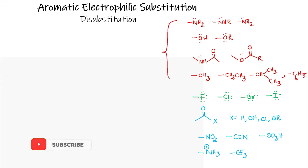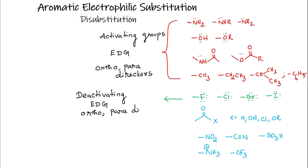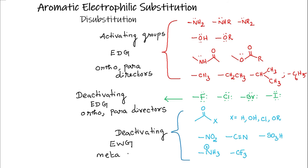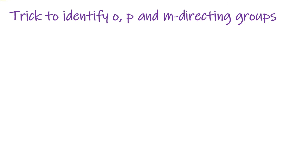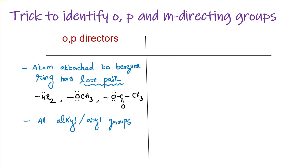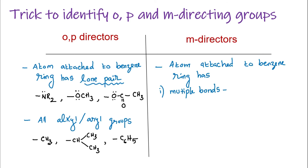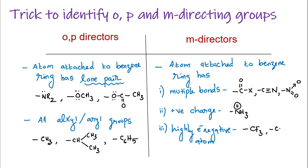All the groups shown in red are activating groups — they are all electron-donating groups and ortho-para directors. Halogens are actually deactivating groups, but they still have lone pairs, so they act as electron-donating groups and are also ortho-para directors. All other groups are deactivating groups, electron-withdrawing groups, and they are meta-directors. The trick to remember: to be an ortho-para director, the atom attached to the benzene ring should have a lone pair, except for alkyl and aryl groups. To be a meta-director, the atom attached to the benzene ring should have multiple bonds, a positive charge, or be attached to highly electronegative atoms.